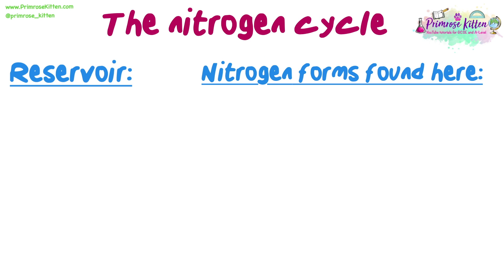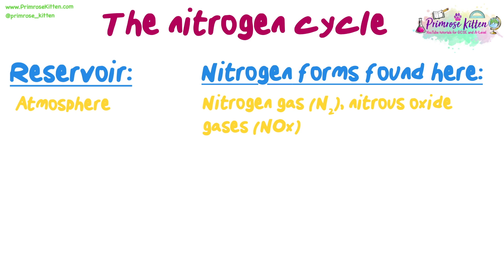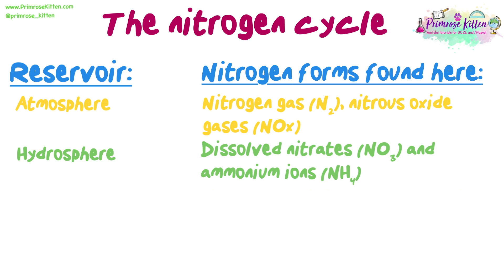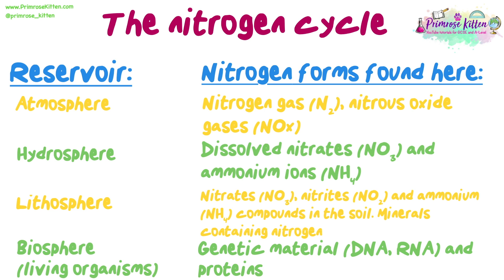Just as we did with the carbon cycle, we need to make sure we know the different forms that nitrogen can be found in each reservoir. In the atmosphere: nitrogen gas and nitrous oxide gases. In the hydrosphere: dissolved nitrates and ammonium ions. In the lithosphere: nitrates, nitrites, and ammonium compounds in the soil, and also minerals containing nitrogen. In the biosphere: genetic material, DNA and RNA, and proteins.